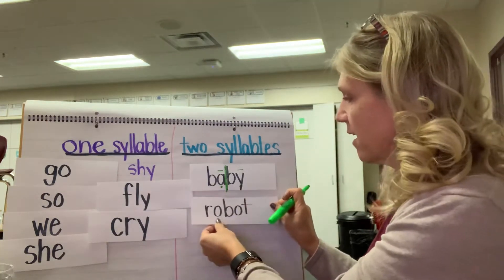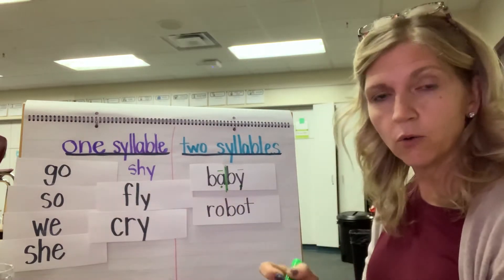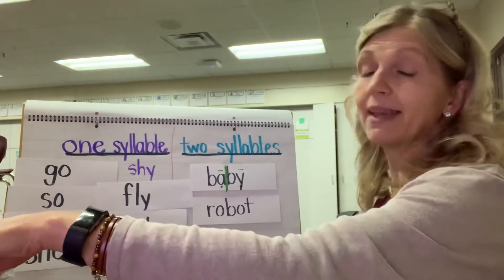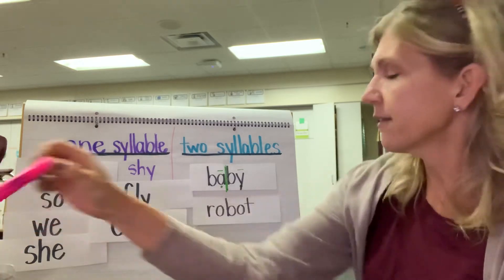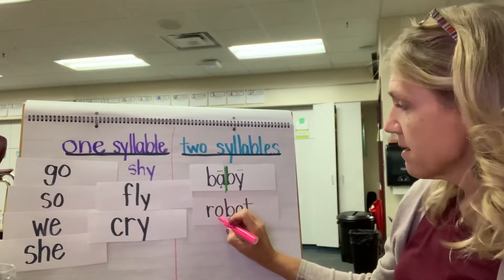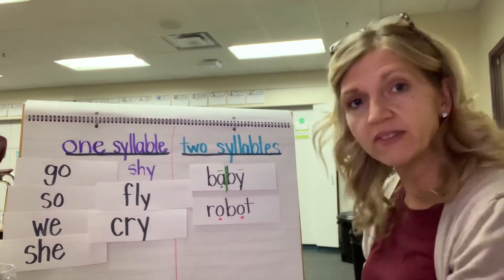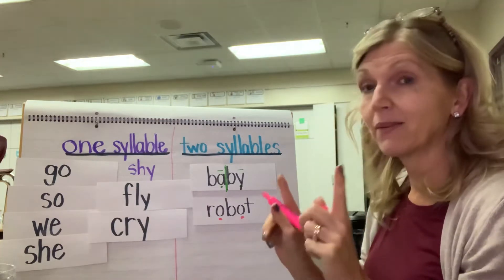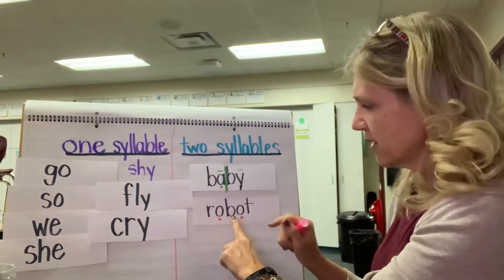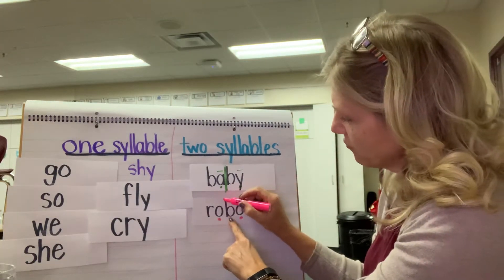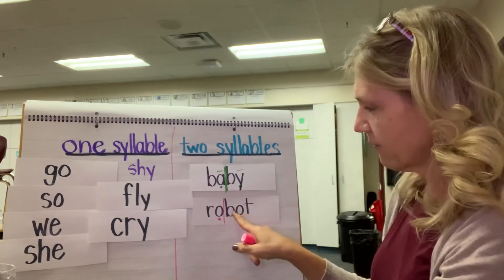On your slate, let's write R-O-B-O-T. Many of you probably know this word, but let's mark our vowels. The first vowel is O, and the second vowel is O. Are those vowels together or apart? They're apart. And how many consonants are between them? Just one. So I'm going to try cutting it right between that first vowel and the consonant that follows it.